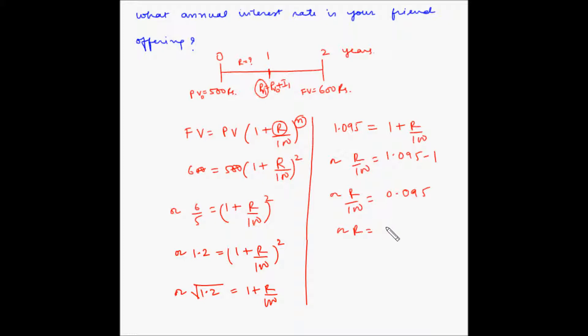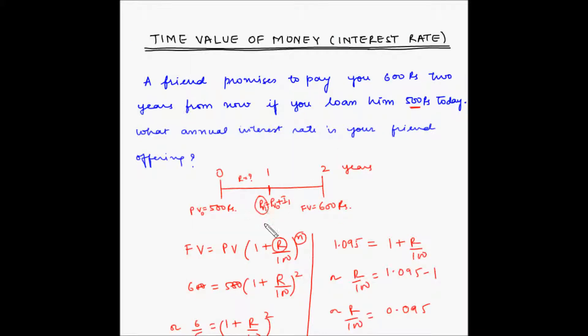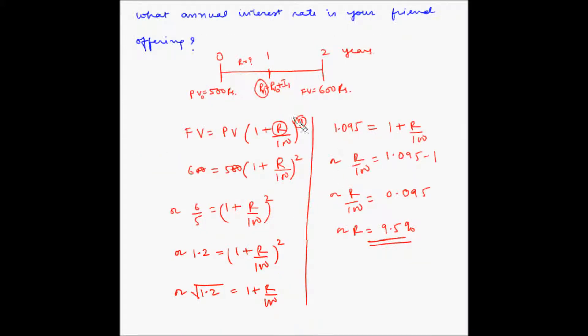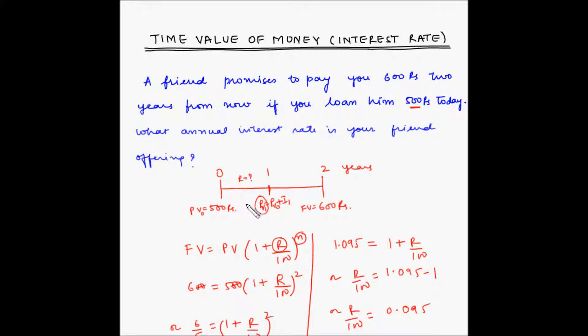Or r is equal to, now we will multiply this with 100, so 9.5 percent. So you are getting a 9.5 percent interest per annum if your present value of 500 is going to become a future value of 600 in 2 years.